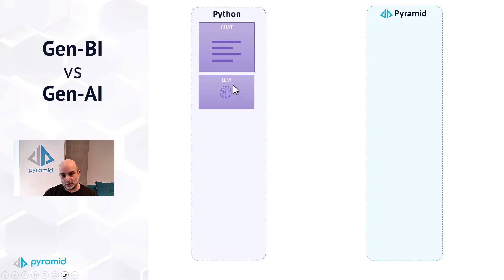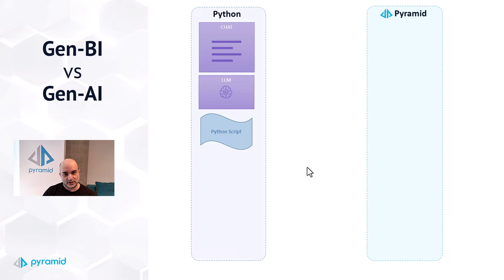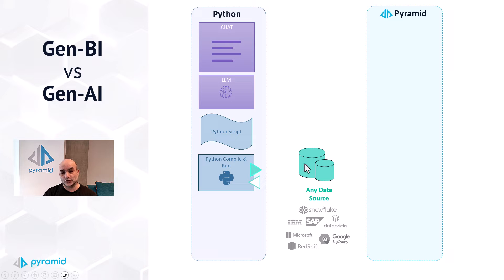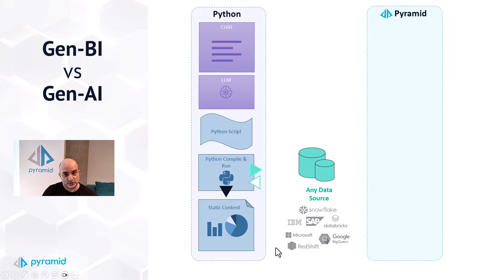The large language model understands what you're asking for and generates a Python script. That script includes all the Python to recreate the business of querying a database, doing analysis, and ultimately visualizing the result and spinning it back out to you as the user. The script then has to be compiled and run, talking to a database, getting results back, and producing a result set and visualization — which is, of course, static.